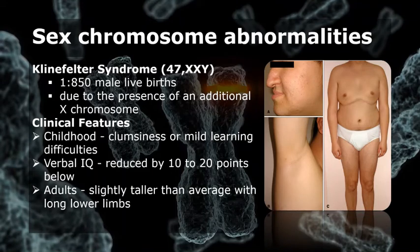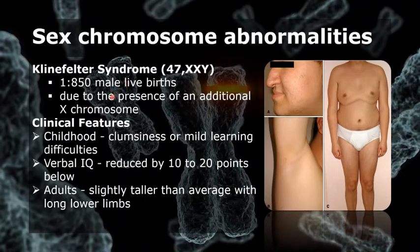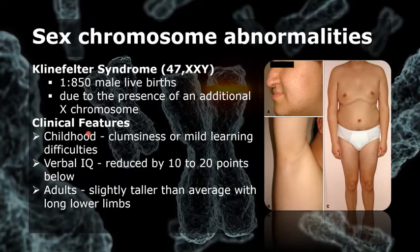Let's start with Klinefelter syndrome. This is a common condition with an incidence of one in 850 male live births. It is due to the presence of an additional X chromosome. For its clinical features in childhood, the child with this abnormality may be clumsy or have mild learning difficulties.